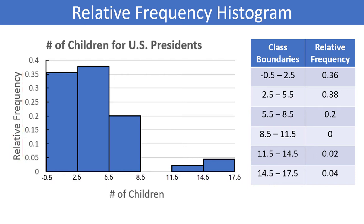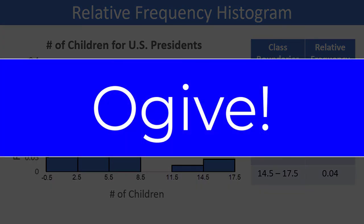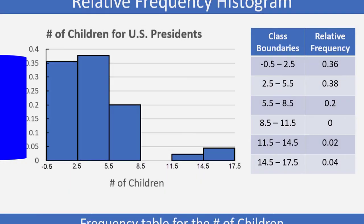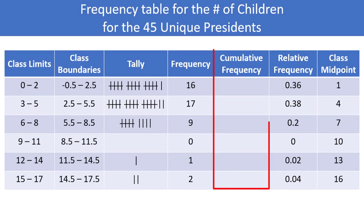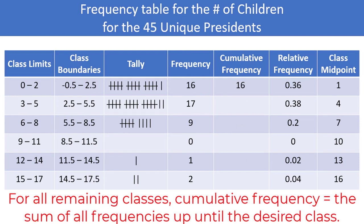We are basically done with our discussion of frequency tables and histograms, but there is one more thing to discuss — the construction of what is called an ogive. To create an ogive, we need to add another column to our frequency distribution titled cumulative frequency. For the first class, the cumulative frequency is simply the frequency, which is 16 in our case. For the second class, add up all previous frequencies — so we take 16 plus 17, which equals 33. This tells you that there are 33 presidents who had 5 or fewer children.